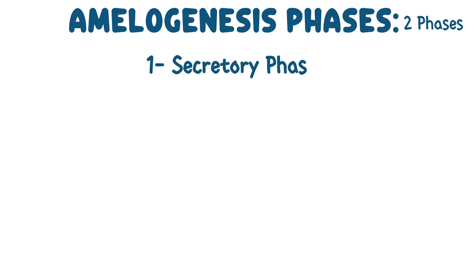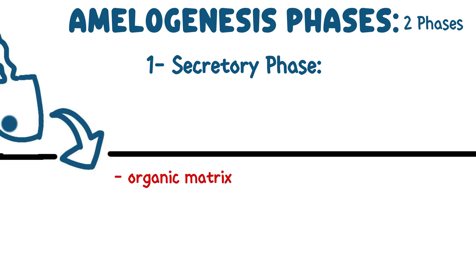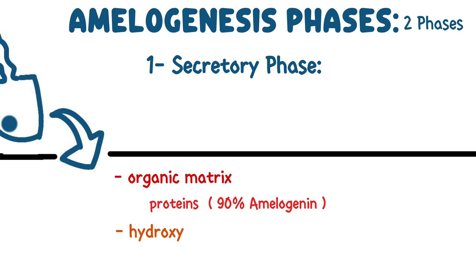Amelogenesis contains two phases. One, secretory phase. In this phase, the organic matrix is secreted, which contains proteins, primarily enzymes. Amelogenin makes up 90% of this matrix. Following this, the formation of hydroxyapatite crystals begins for the process of mineralization.